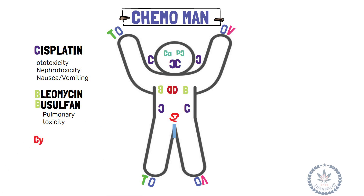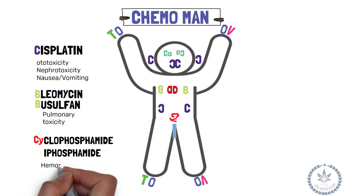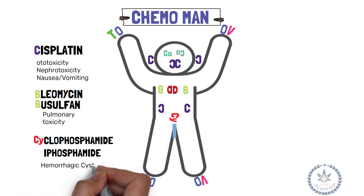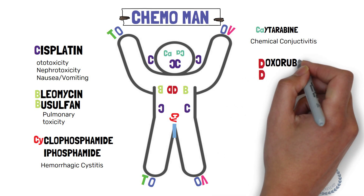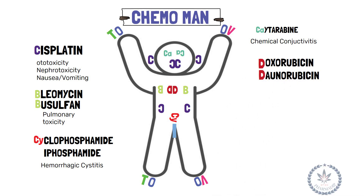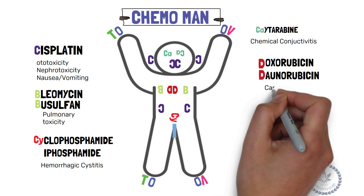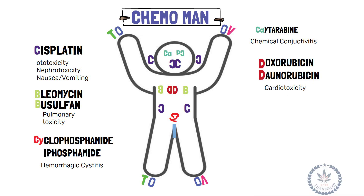CY around the abdominal area stands for cyclophosphamide. Both cyclophosphamide and ifosfamide cause hemorrhagic cystitis. CA around the eye area stands for cytarabine, and its toxicity leads to chemical conjunctivitis. D near the chest stands for doxorubicin and daunorubicin. The toxicity of these two drugs leads to cardiotoxicity. D is situated near the chest, that is near the heart, meaning it causes toxicity of the heart — that is cardiotoxicity.